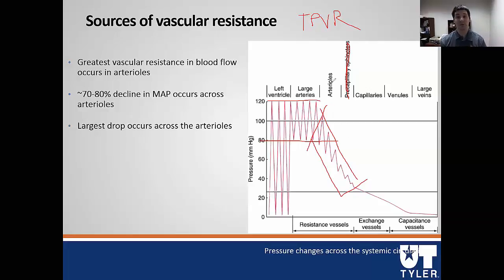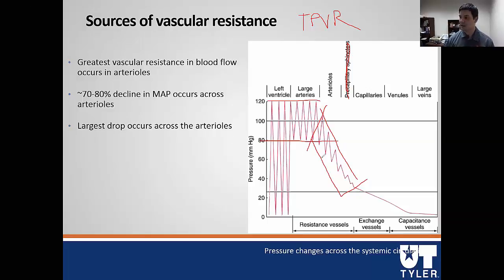As we'll get into with blood flow changes during exercise, we can open and close arterioles. If we open a whole bunch of them, that will decrease total peripheral vascular resistance because more vessels are open. The veins and venules contribute very little. The total pressure in the system is 120 over 80, with most of that drop happening in our resistance vessels.